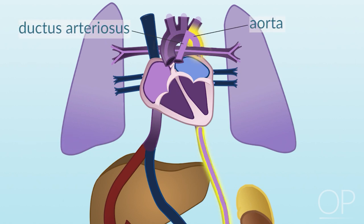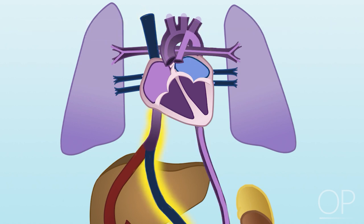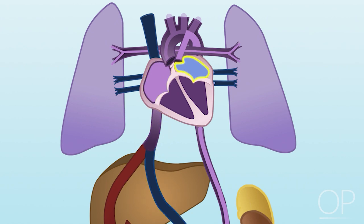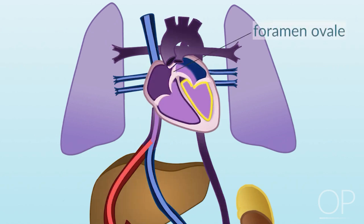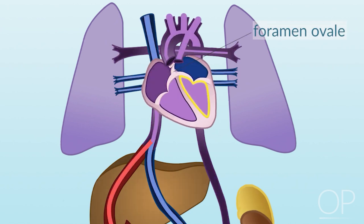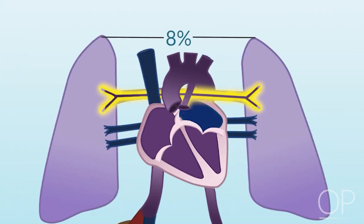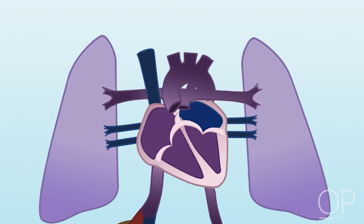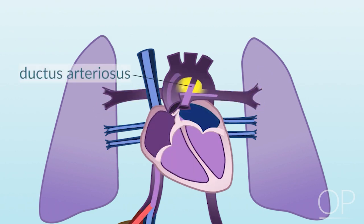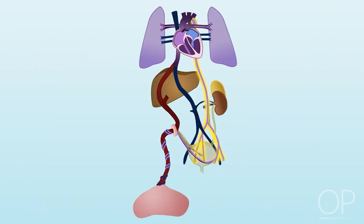Due to the high blood flow from the superior vena cava and the inferior vena cava up to the right atrium, pressures in the right atrium are higher than in the left atrium. This promotes blood flow through the foramen ovale at the atrial level. Only 8% of right ventricular output flows into the lungs, providing nutrients for the developing lung tissues. Most of the blood passes through the ductus arteriosus into the aorta and out to the body.